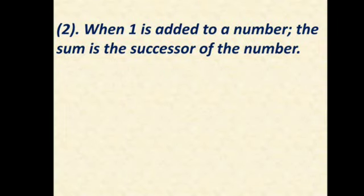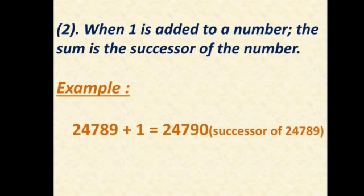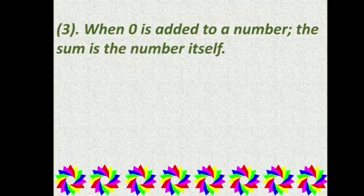Property 2: When 1 is added to a number, the sum is the successor of that number. For example, 24789 plus 1 equals 24790, which is the successor of 24789. Whenever we add 1 to any number, we get the successor of that number.